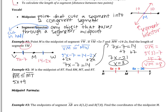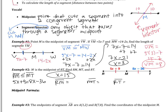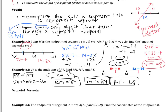You should have gotten 5x plus 9 equals 8x minus 36, and solving that, x equals 15. You are then asked to find RM, MT, and RT. You should have gotten RM equal to 84, MT equal to 84, and RT equal to 168. Does this make sense? Since M is a midpoint, RM and MT should be equal. If you got answers where they weren't equal, that should have told you something was wrong. Hopefully you got 84, 84, and 168 — if not, go back and fix your mistake.